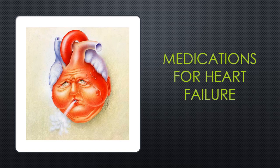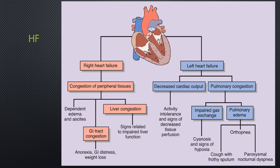Now let's look at some medications used for chronic heart failure. Remember that the heart has two sides, left and right, and we classify heart failure as left-sided or right-sided. Left-sided heart failure is usually caused by chronic hypertension or increased afterload, causing failure of the left ventricle which then backs up into the lungs. Common signs and symptoms are crackles, paroxysmal nocturnal dyspnea, orthopnea, pink frothy sputum, decreased cardiac output, activity intolerance, cyanosis, hypoxia, and decreased tissue perfusion.